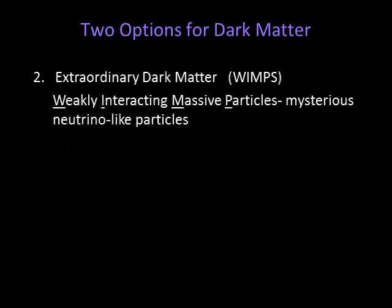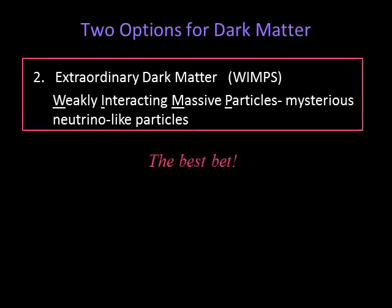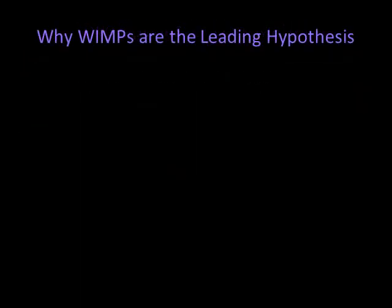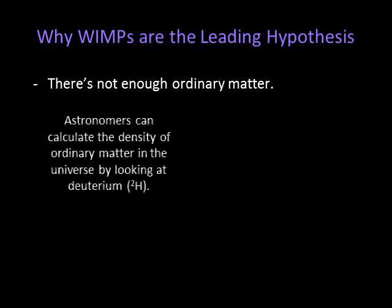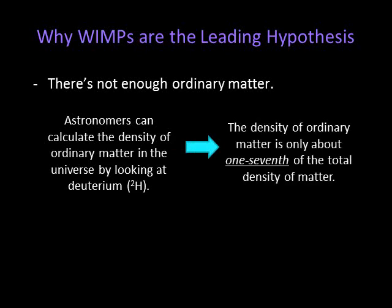The second option is that dark matter is some sort of exotic matter. Astronomers often call this possibility WIMPs, which stands for Weakly Interacting Massive Particles. The name implies the particles have mass, but we're talking about very small subatomic particles. Astronomers believe WIMPs are the best bet for a variety of reasons. First, there simply does not appear to be enough ordinary matter. The amount of deuterium — heavy hydrogen — left over from the Big Bang, as well as observations of the cosmic microwave background, indicate that ordinary matter adds up to only about one-seventh of the total amount of matter. The rest of the matter is thought to be exotic dark matter, or WIMPs.